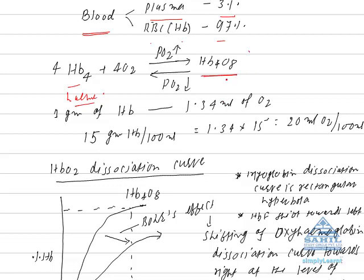The factor responsible for association of oxygen to hemoglobin is partial pressure of oxygen. Partial pressure of oxygen is more in the lungs, where association occurs. But at low partial pressure, which exists at tissue level, dissociation of hemoglobin occurs.